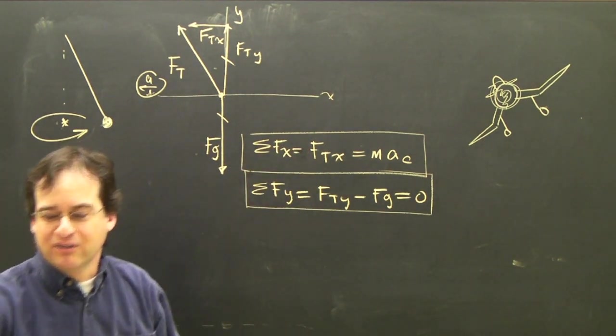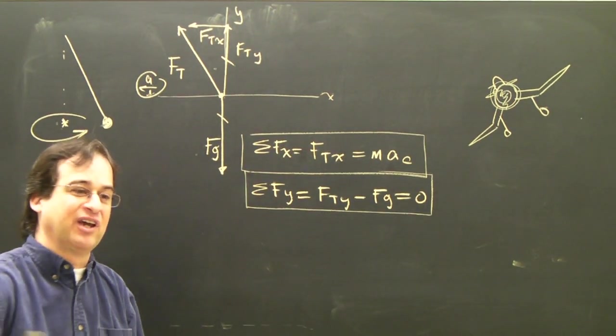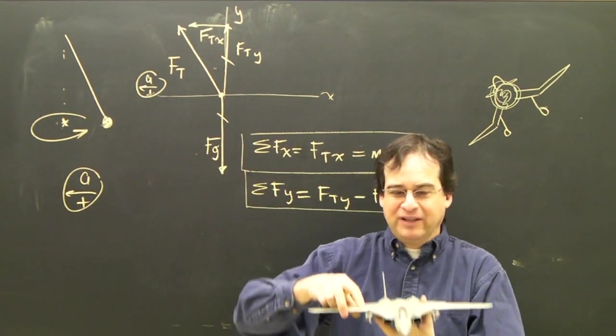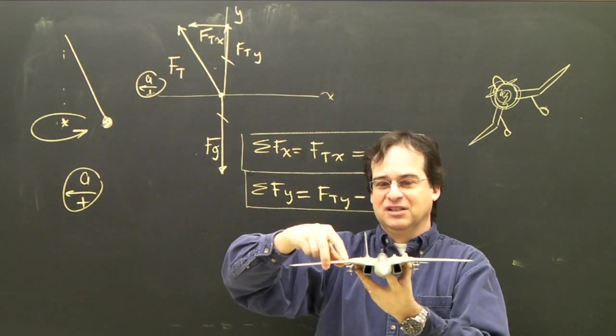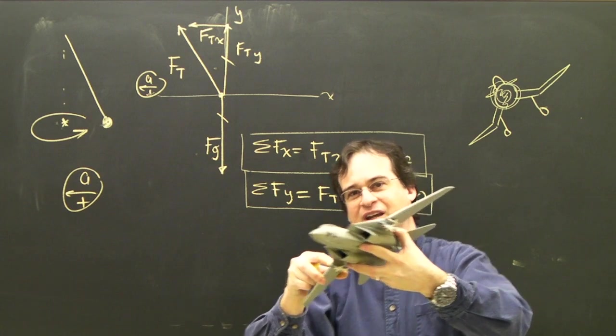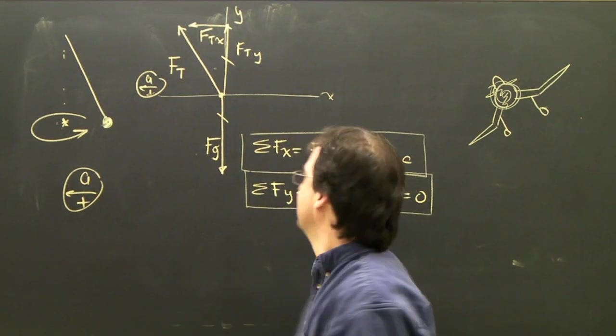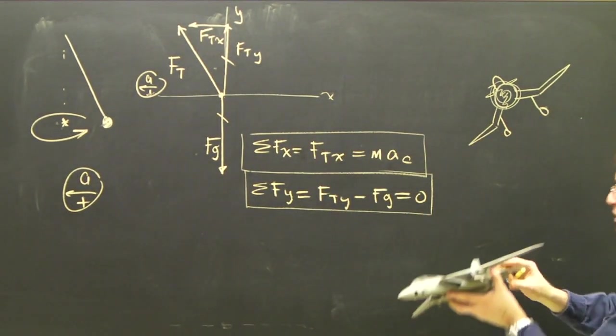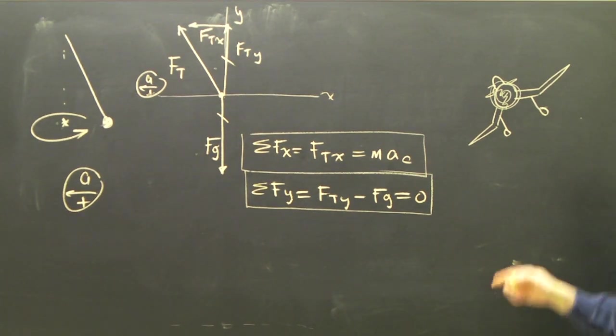I just want to point out that this problem is very similar to looking at how an airplane turns. When an airplane turns a corner, it doesn't go like this. It tips its wings, and it turns this way, like that. I've drawn an airplane on here.